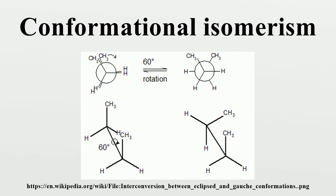While simple molecules can be described by these types of conformations, more complex molecules require the use of the Klyne-Prelog system to describe the different conformers. More specific examples of conformational isomerism include ring conformations such as cyclohexane chair and boat conformers, carbohydrate conformation, allylic strain, atroposomerism — where due to restricted rotation about a bond a molecule can become chiral — and folding of molecules, where some shapes are stable and functional but others are not.